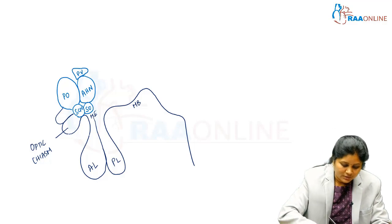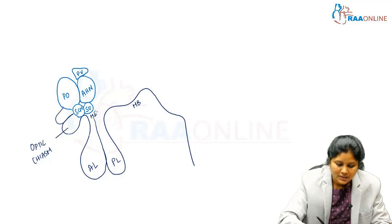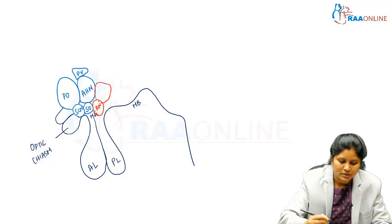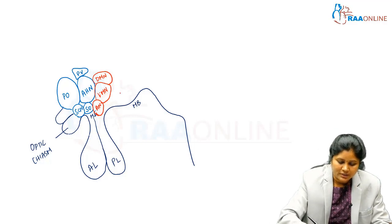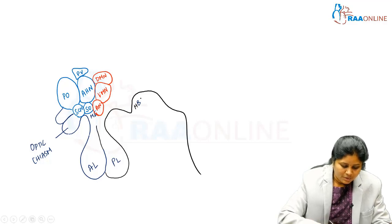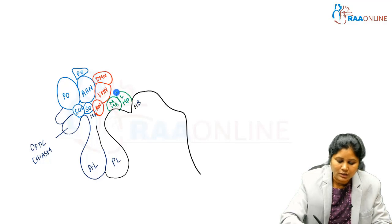For the medial group, using a different color, at the base you have the arcuate nucleus. Just above the arcuate nucleus is the larger ventromedial nucleus, and on top of that is the dorsomedial nucleus. Then comes the posterior group: the mammillary bodies are located here, consisting of the medial mammillary body and lateral mammillary body, with the posterior hypothalamic nucleus on top of them.